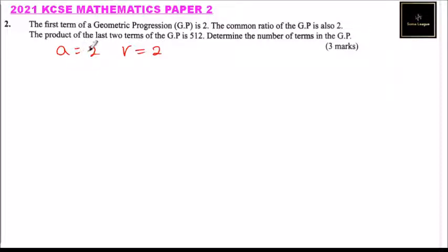The product of the last two terms of the GP is 512. Determine the number of terms in the GP. So geometric progression is of this form: a, ar, ar squared, and you continue like that.